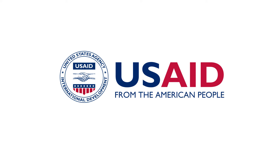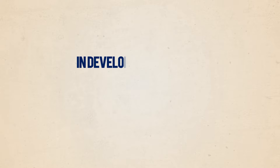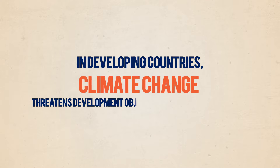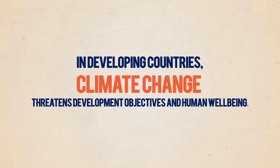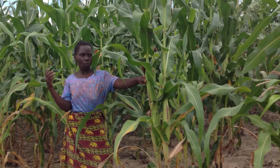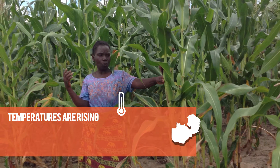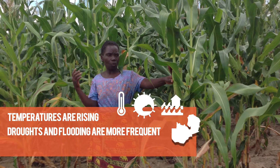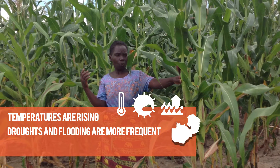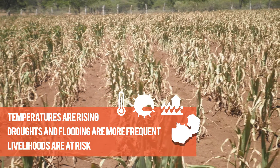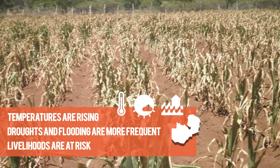In developing countries around the world, climate change threatens to jeopardize economic and social development objectives and human well-being. In Zambia, temperatures are rising and droughts and flooding are becoming more frequent, placing rural livelihoods at risk, from subsistence farmers to agribusiness workers.